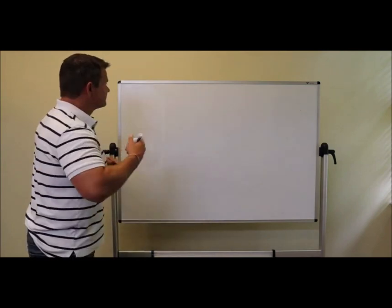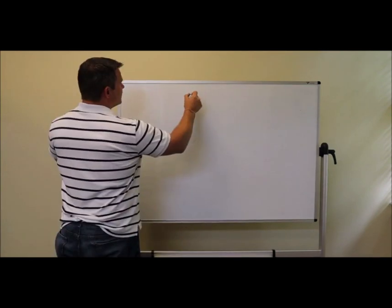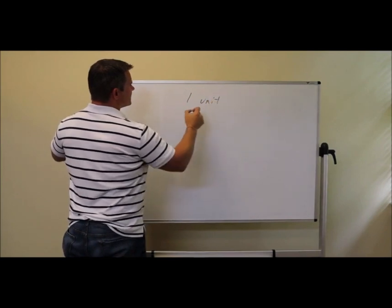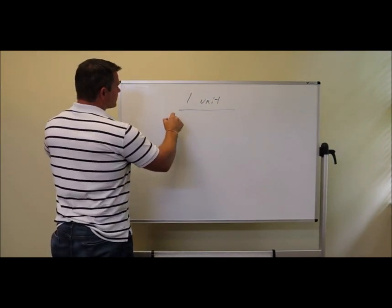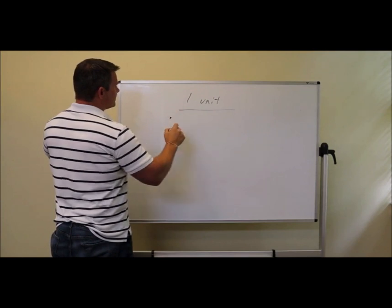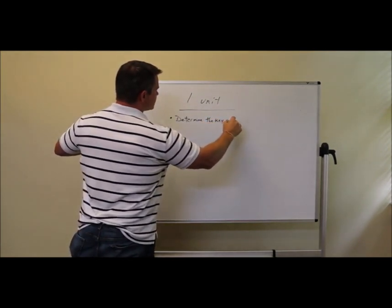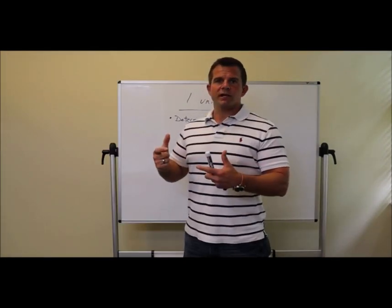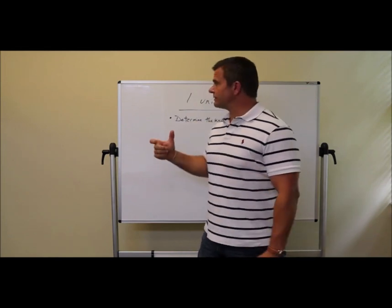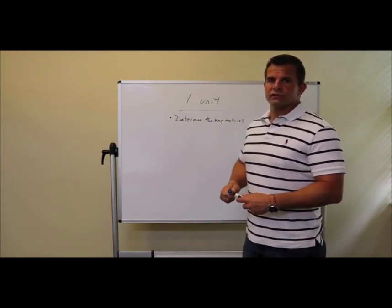The first thing we want to do is, if we're looking at one unit and we're going to track the performance of this unit, we want to determine the key metrics. What do I mean by that? If we have certain things in the recipe that lead to the success of a certain unit, then we have to determine what those are.